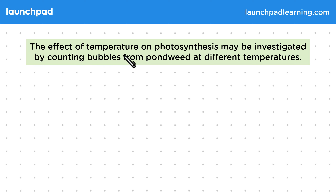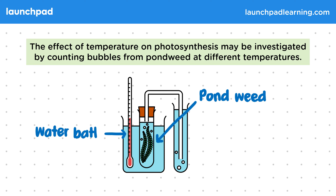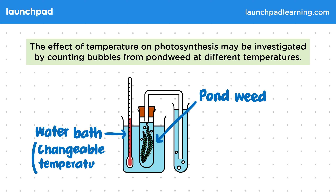The effect of temperature on photosynthesis may be investigated by counting bubbles from pondweed at different temperatures. In this investigation, the bubbles of oxygen released every minute can be counted as a measure of the rate of photosynthesis, with the temperature of the water being changed within the water bath.